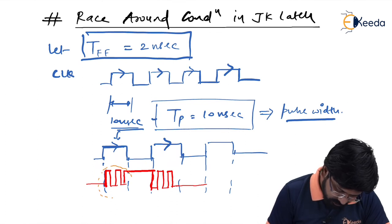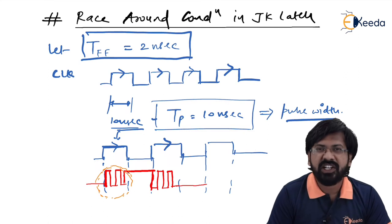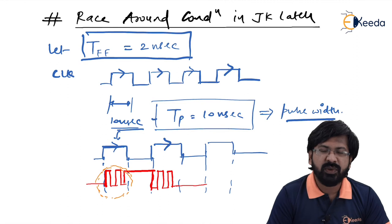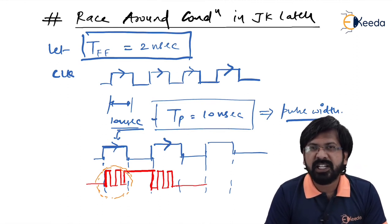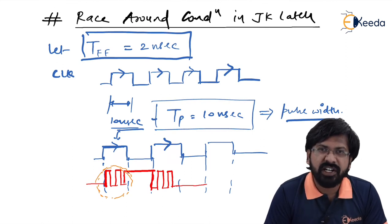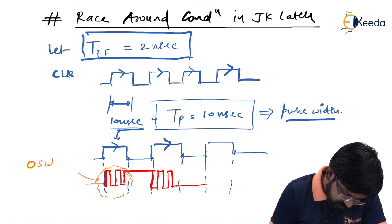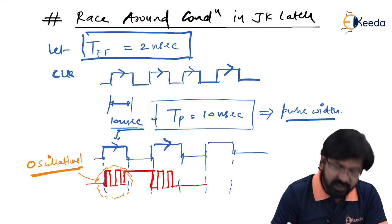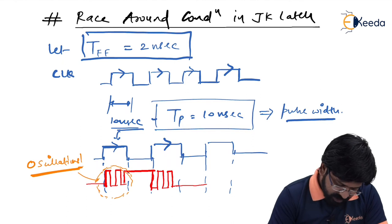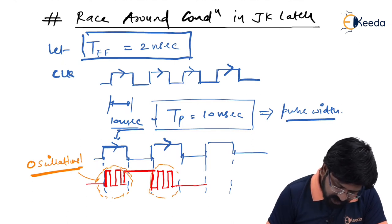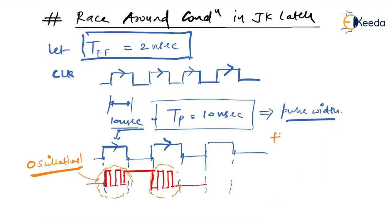As you can see, this output is not getting toggled only once per clock — on average it is getting toggled 5 times per clock. Because of this multiple toggling, it is actually behaving as if it is an oscillatory device. These are nothing but oscillations, and this oscillatory output is undesirable. This problem is named race around condition.